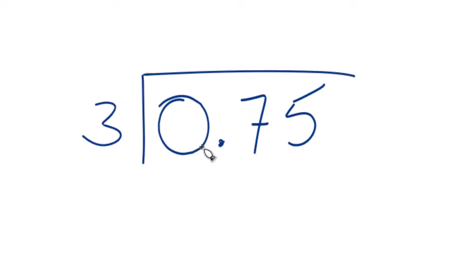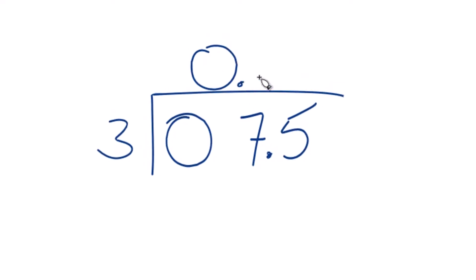So 3 doesn't go into 0. But what we could do is move the decimal point over here as long as we put a 0 and a point up here. So now 3, that'll go into 7.